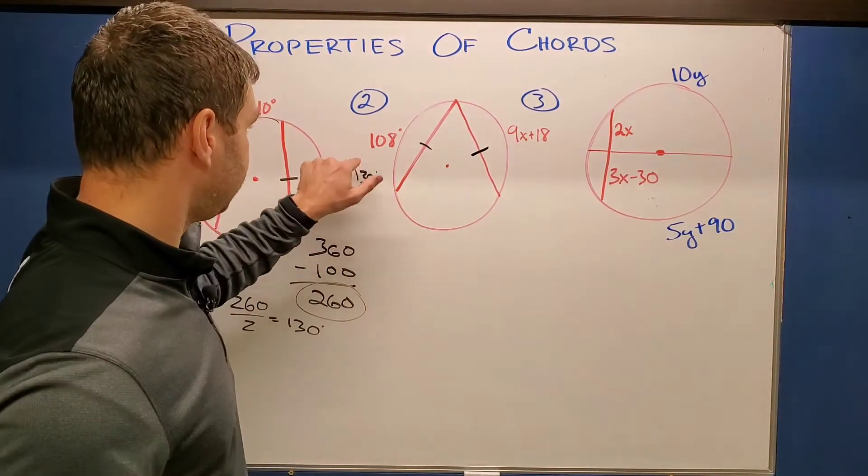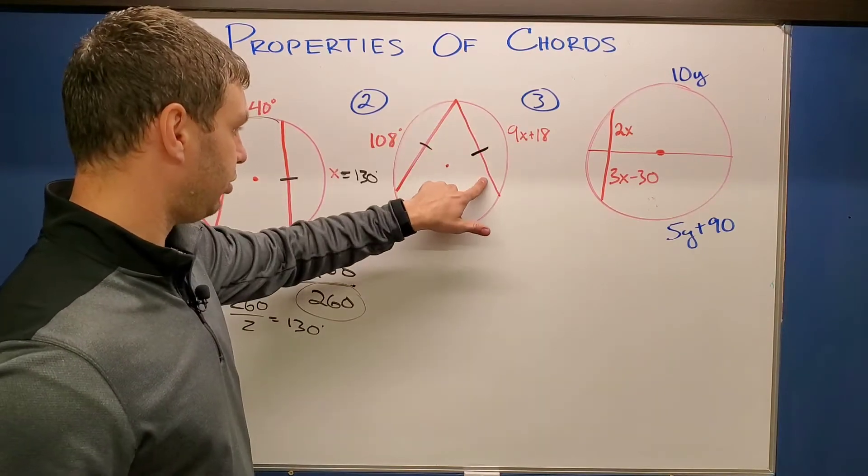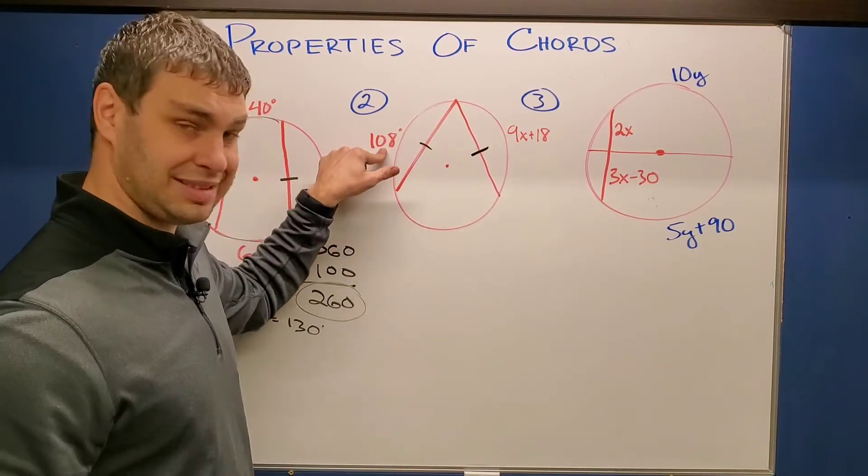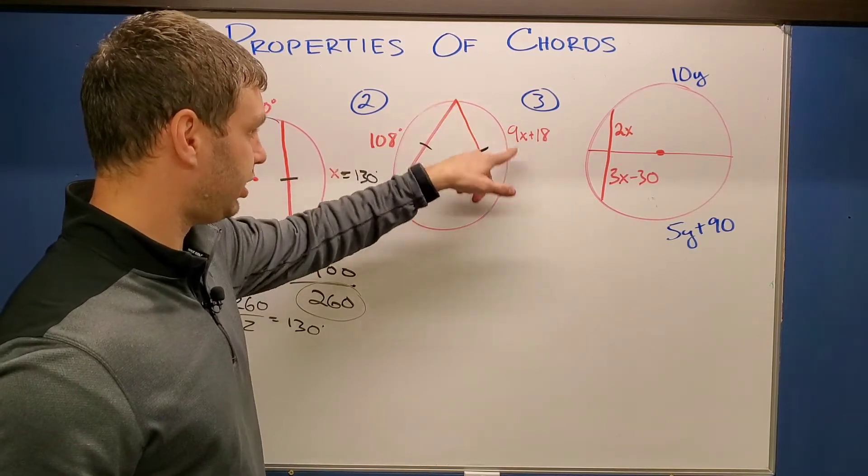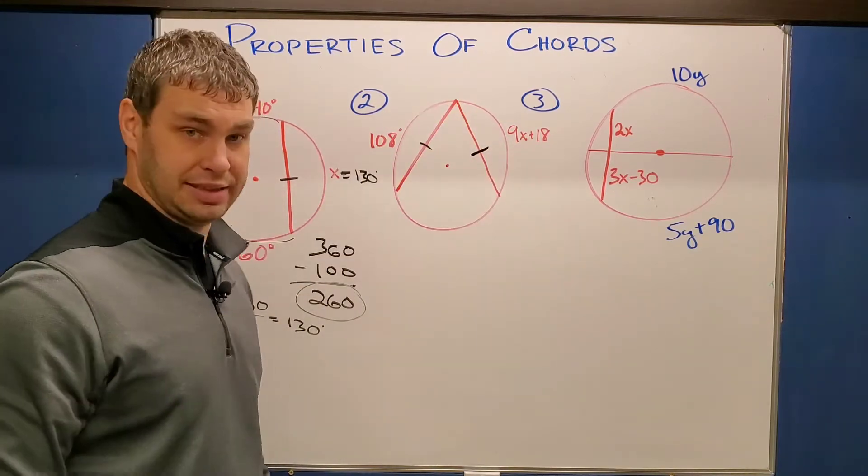All right, number two. Let's see, we have another couple of chords that are congruent. This side is 108 degrees for that arc right there. And then for this arc, it's 9X plus 18.